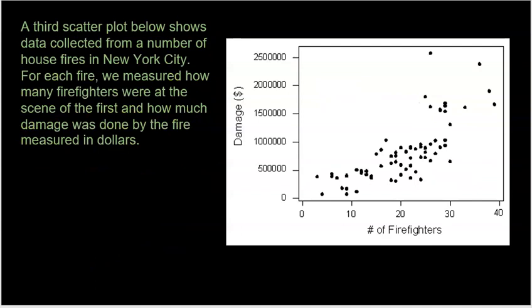All right, here's another one. The third scatterplot below shows data collected from a number of house fires in New York City. For each fire, we measured how many firefighters were at the scene of the fire and how much damage was done by the fire measuring dollars. So again, what we did here was we looked at the X variable of how many firefighters were on the scene. And then we looked at how much damage was done and that was done in dollar amount. I guess maybe we need an insurance company to kind of figure that out for us.